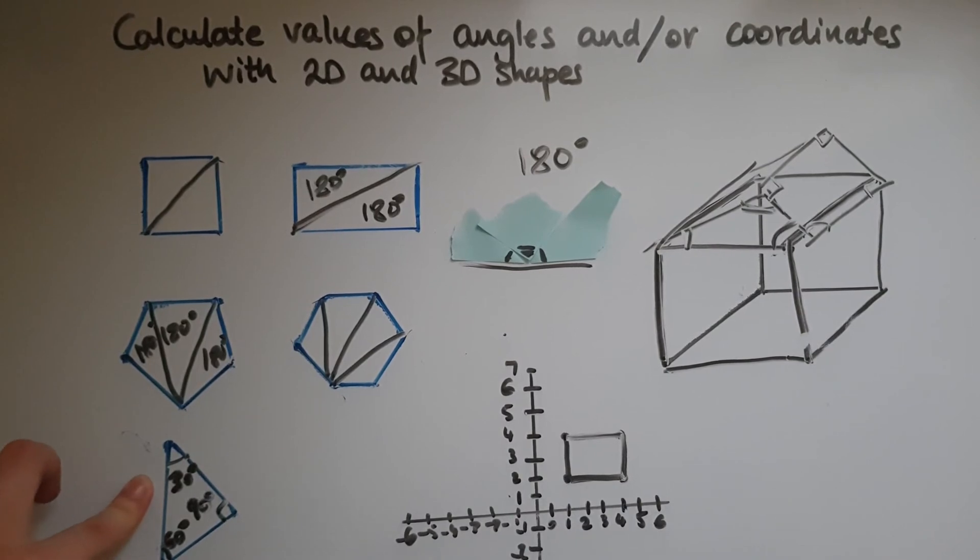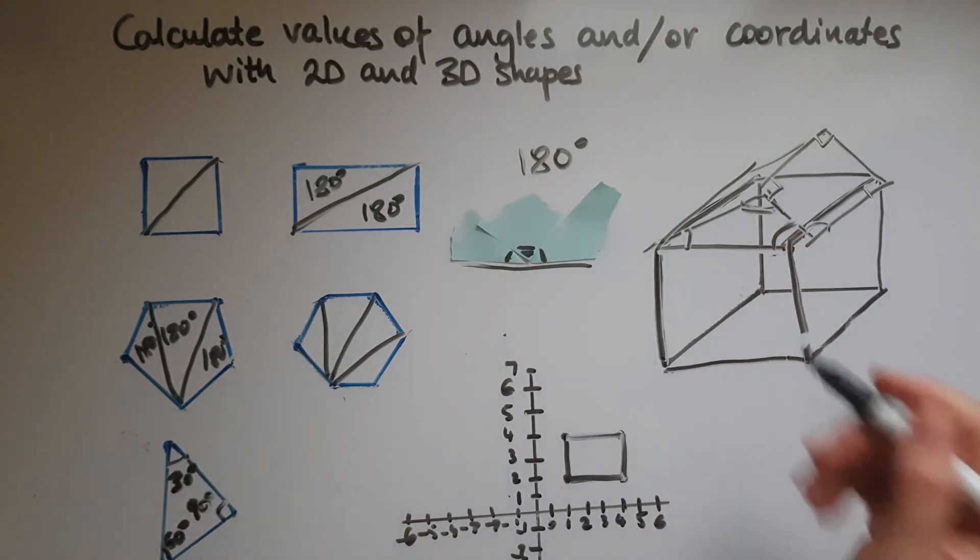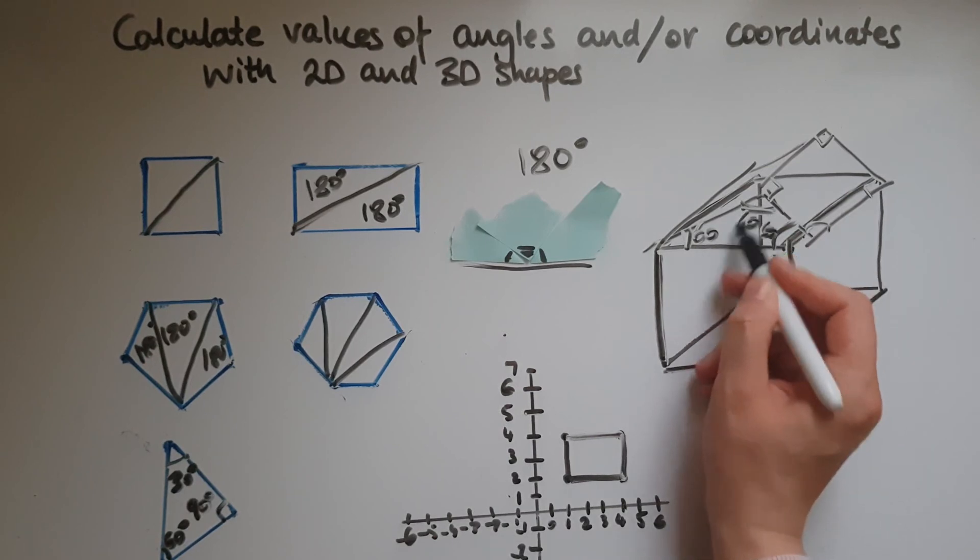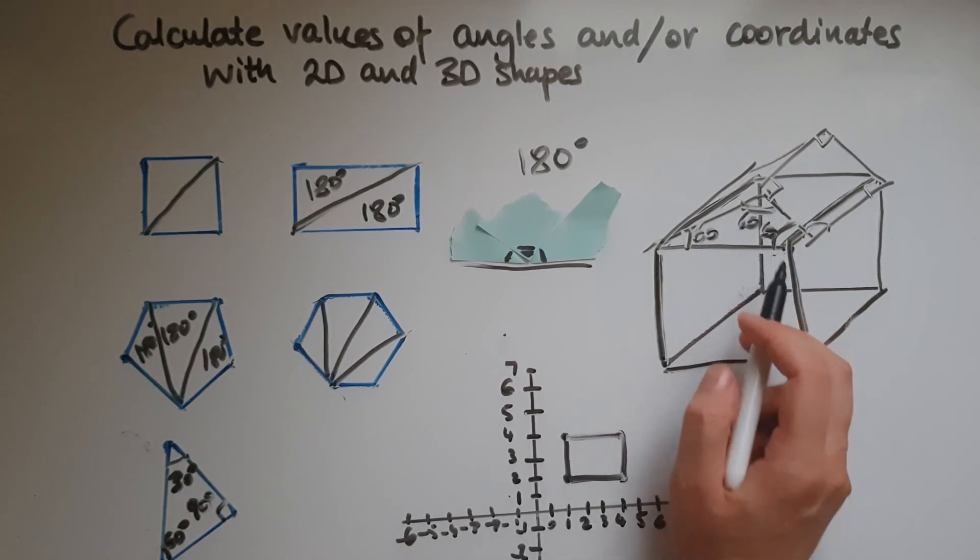So whatever we learned about the angles of a triangle, which add up to 180 degrees, we can use it here. So if this is 60 and this is 60, this is going to be 60 as well because they all add up to 180.